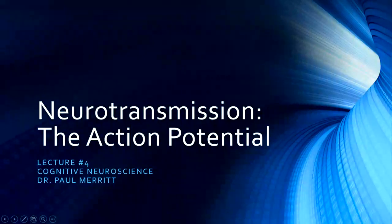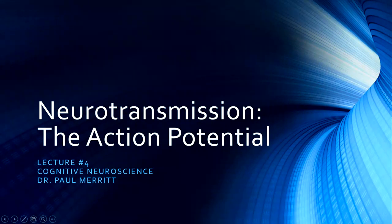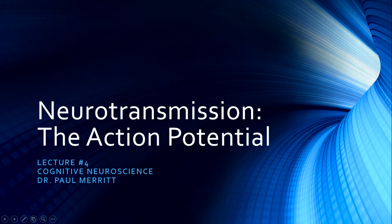Hello, and welcome to our fourth lecture in cognitive neuroscience. We're continuing discussing how neurons function. In the previous lecture we talked about the cellular membrane and the processes that maintain a charge across the cellular membrane — we call that the resting membrane potential. Now we're going to talk about how neurotransmission occurs by the generation of an electrical signal known as the action potential.